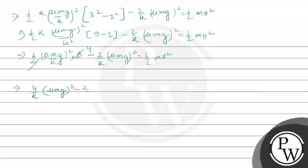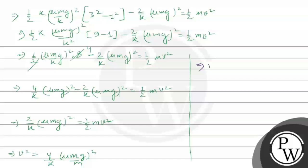This gives us half k into x1 square minus x square minus 2 by k into mu mg square equals to half m v square. After simplification, half k into mu mg square by k square times 8 minus 2 by k mu mg square equals to half m v square. Simplifying further, v square equals to 4 by k into mu g square into m, so v equals to 2 mu g root m by k.